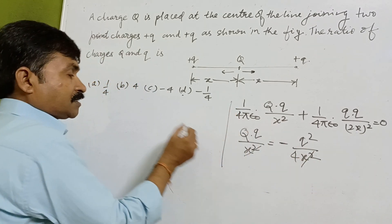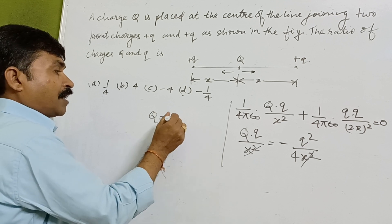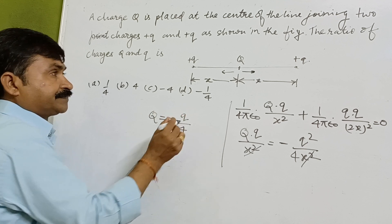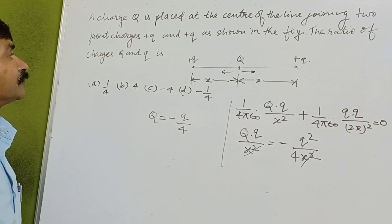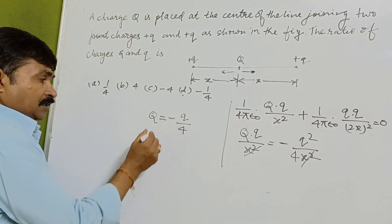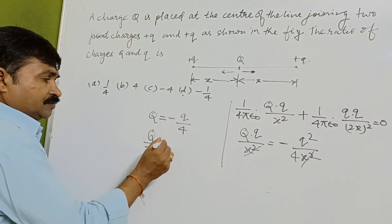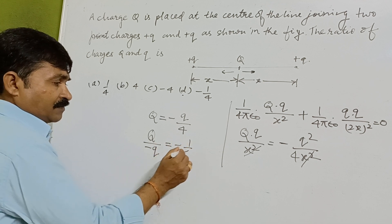Q to Q cancels, so we are having here Q minus Q/4, minus Q/4. So Q upon minus Q which will be equal to minus 1/4.